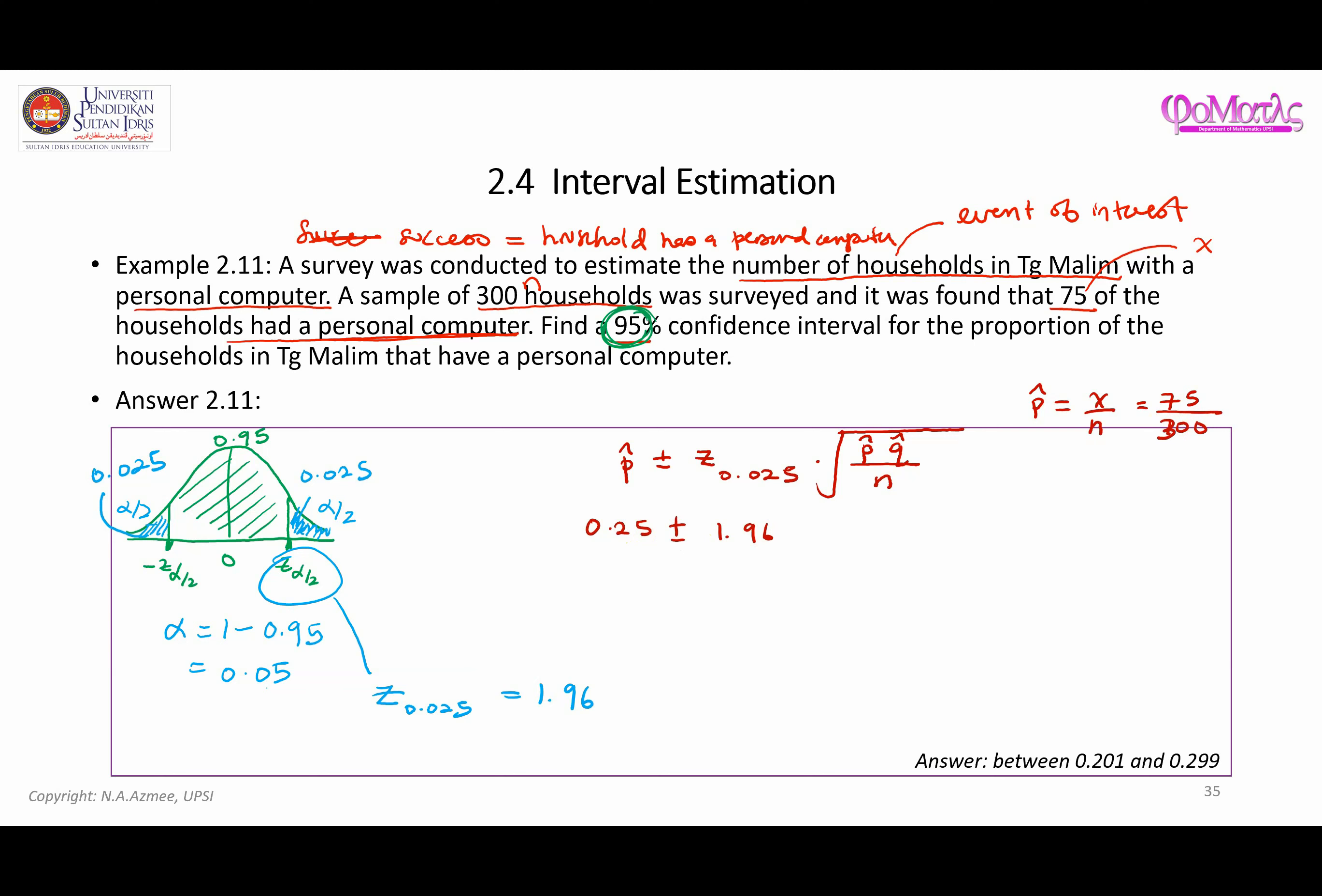I'm just plugging in all the values. If you plug in these values into your calculator, you should be able to get that the population proportion is going to be between these two values here, which is 0.201 and 0.299.